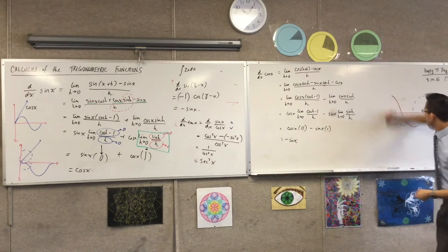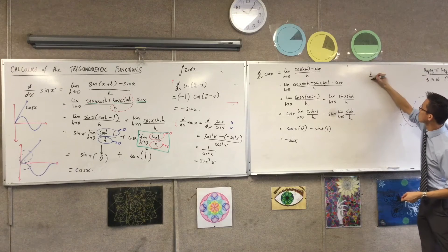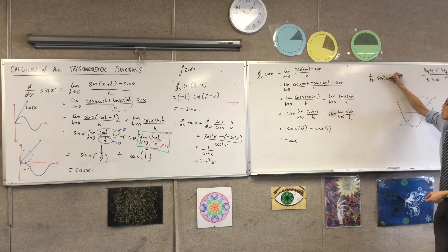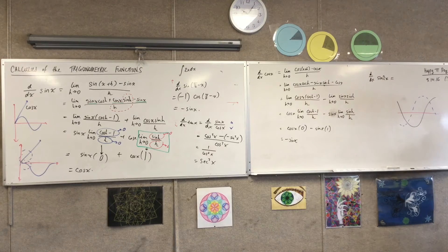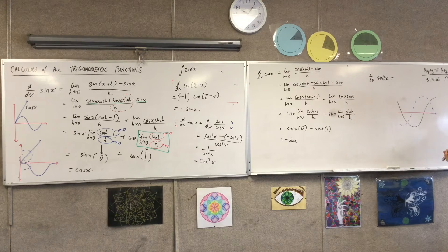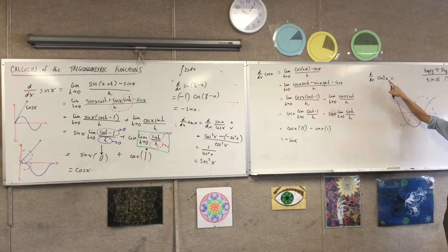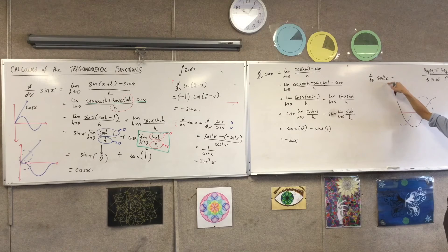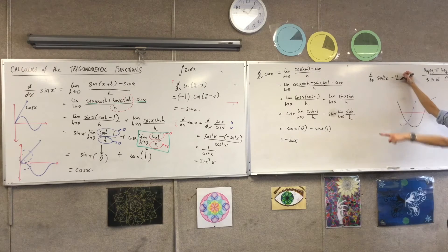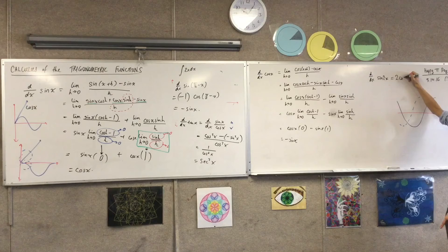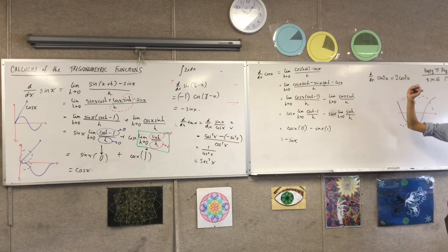For instance, I could ask you what's the derivative of, let's just do a simple one to begin with, sine 2x. This is a chain rule, right? What are you going to do to it? You're going to do the inside, which is 2. And then you're going to do the outside, which is cos. Done. That was not hard.